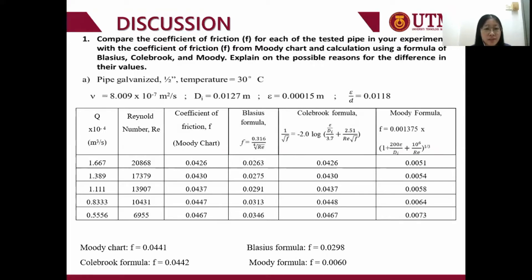For the first pipe — the galvanized steel pipe — the coefficient of friction calculated using the Moody chart is 0.0441. Using the Colebrook formula, the result is 0.0442. The Blasius formula gives 0.0298, and the Moody formula gives 0.0068.